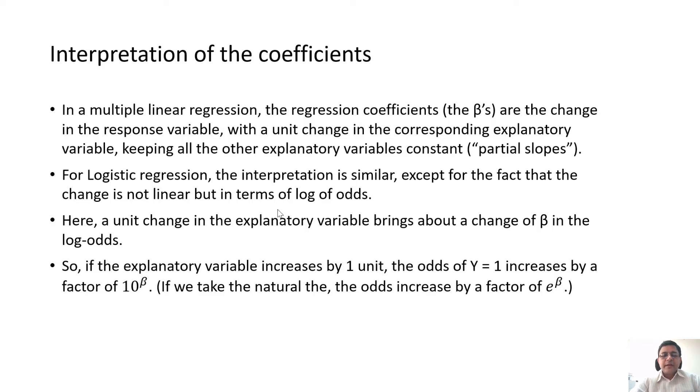If the explanatory variable changes by 1 unit, the odds of y equals 1 increases by 10 to the power of beta if we are using log to the base of 10. If we take natural log, there is a typo here. If we take the natural log, the odds actually increase with a factor of e to the power of beta.